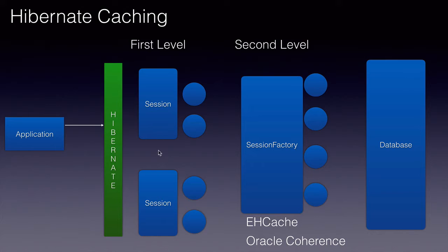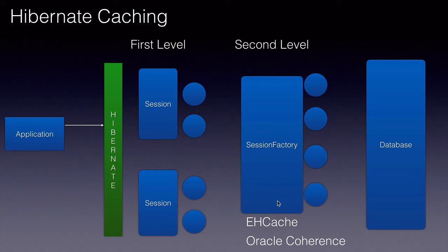We can also qualify which classes or which entities qualify for the second level cache in the configuration file, and cache expiring strategies can be configured for these cache providers in the configuration file.